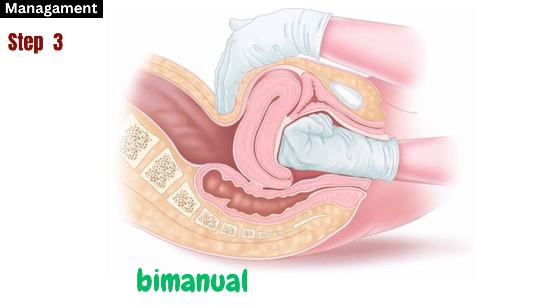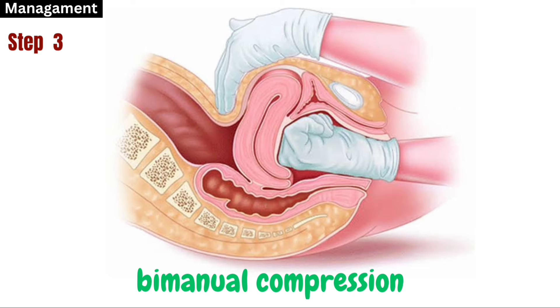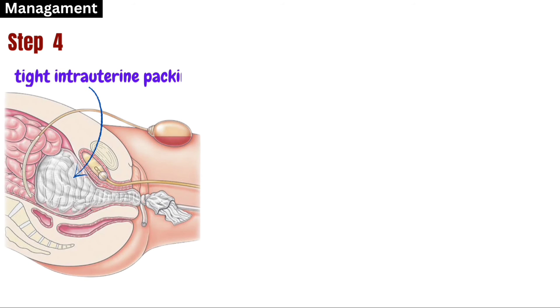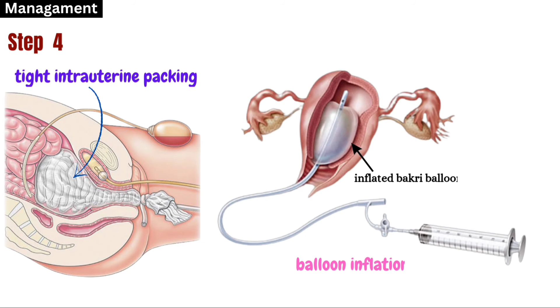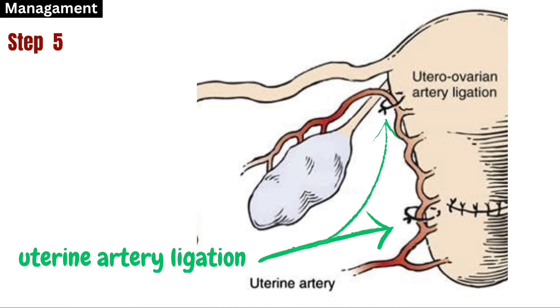Step 3: if bleeding continues, apply bimanual compression with one hand in the vagina and another on the abdomen to put pressure on the placental site and stop bleeding. Step 4: if bleeding still persists, perform tight intrauterine packing — a 5-meter long, 8-centimeter wide folded gauze soaked in antiseptic cream is introduced into the uterus for 24 hours. Alternatively, a Foley catheter balloon, condom catheter, or Bakri balloon inflated with 200 to 500 ml normal saline is kept in the uterine cavity for 46 hours. If bleeding still persists, uterine artery ligation is performed.